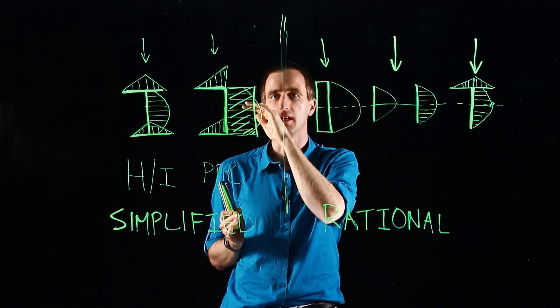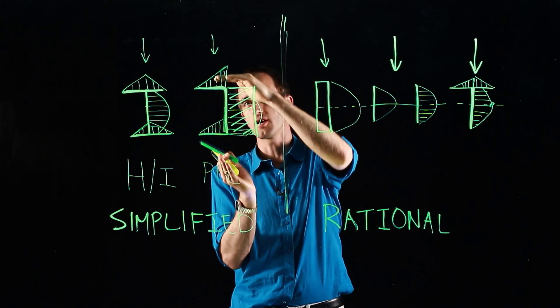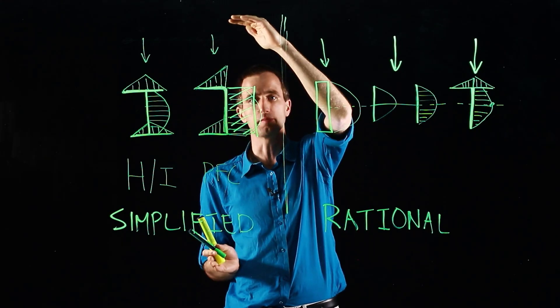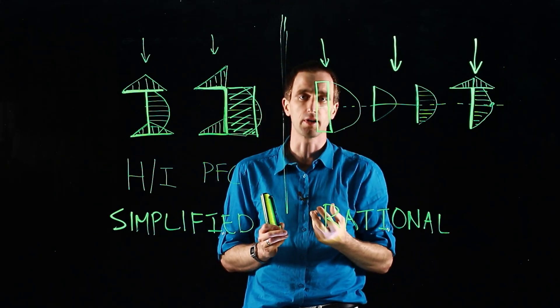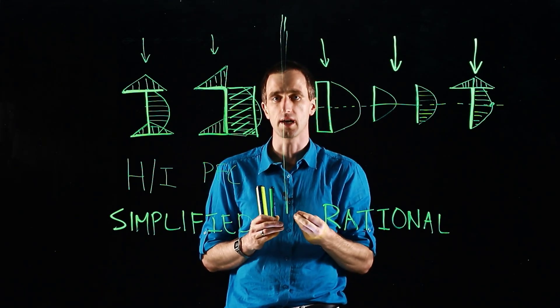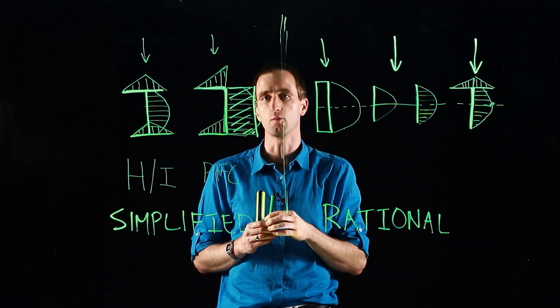For instance, in built-up sections like plate girders, when this starts to become very deep, 800 millimeters, a meter, two meters, then the design of this web becomes very critical in the overall calculations. You may now need to start adding web stiffeners.